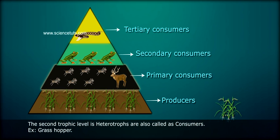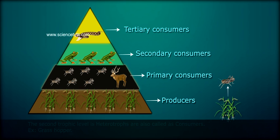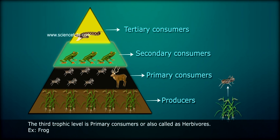The second trophic level is heterotrophs, also called consumers, e.g. grasshopper. The third trophic level is primary consumers, also called herbivores, e.g. frog.